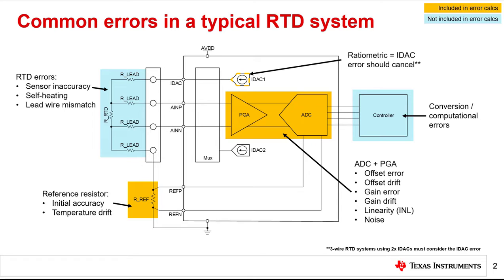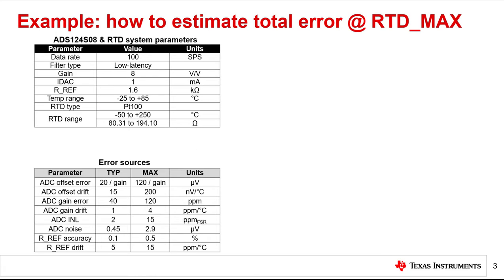Now that we have identified which error sources are used in the total error calculations, let's step through an example to learn how to estimate total error for a specific ADC. For this example, we will select the ADS124S08 to measure the RTD. This ADC is a 24-bit, 13-channel delta-sigma ADC with an integrated amplifier and current sources commonly used for RTD measurements. Next, we need to identify our design specifications before we can begin the error analysis, and we need to calculate three more system parameters.